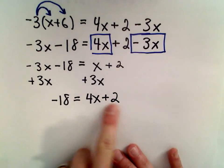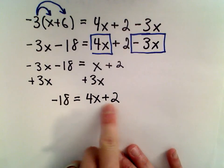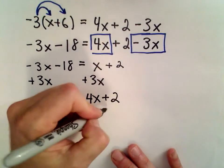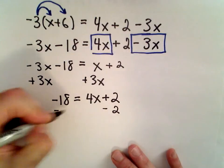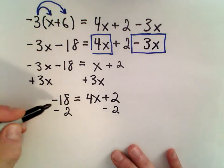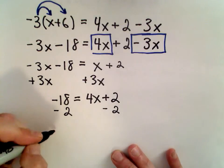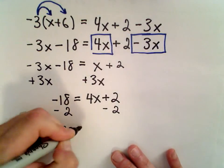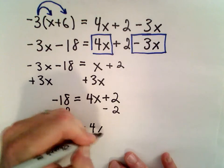I want to move this term involving just a number - it has no variable attached to it. I'm going to get rid of that by subtracting 2 from both sides. Negative 18 minus 2 is negative 20. On the right side, we're just left with 4x.